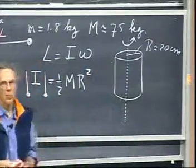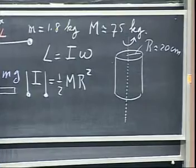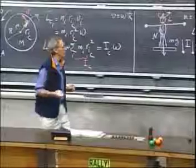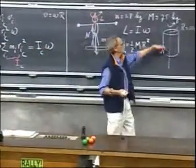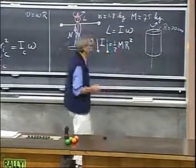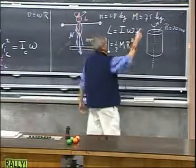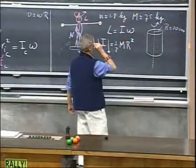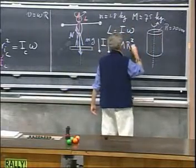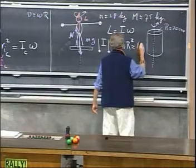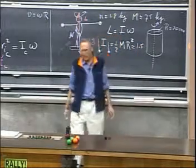That was the moment of inertia we discussed last time, of a rotating disk which rotates about the line of symmetry. If I put in the numbers here, the 75 kilograms, and I take a radius of 20 centimeters, then I found that this is about 1.5 in our MKS units.